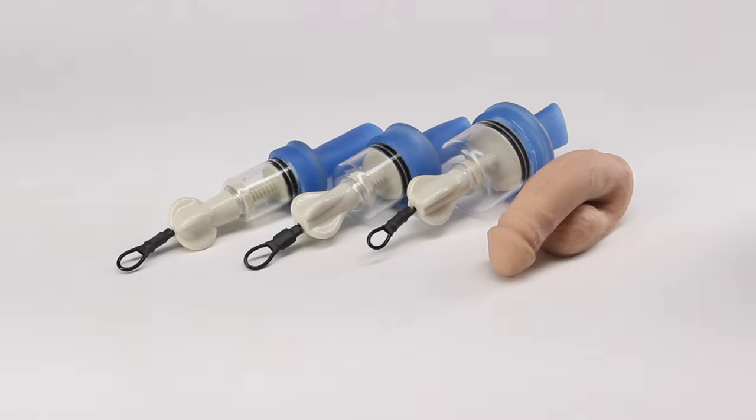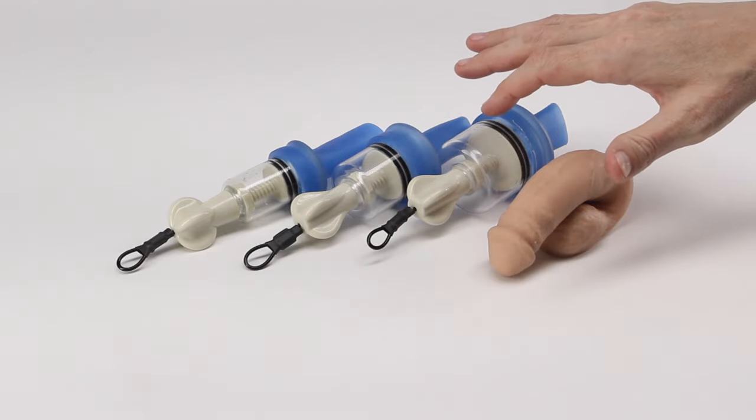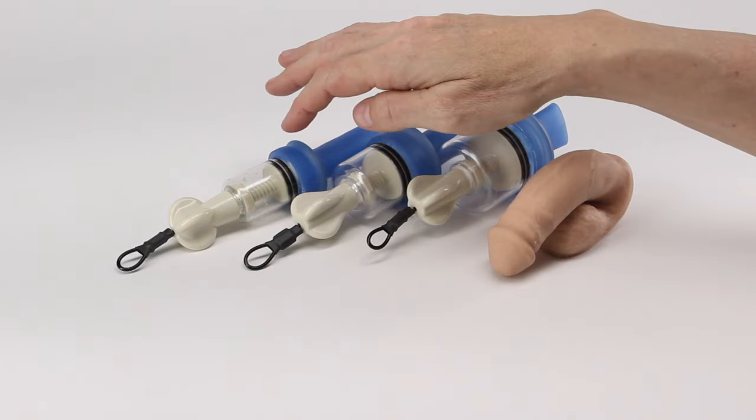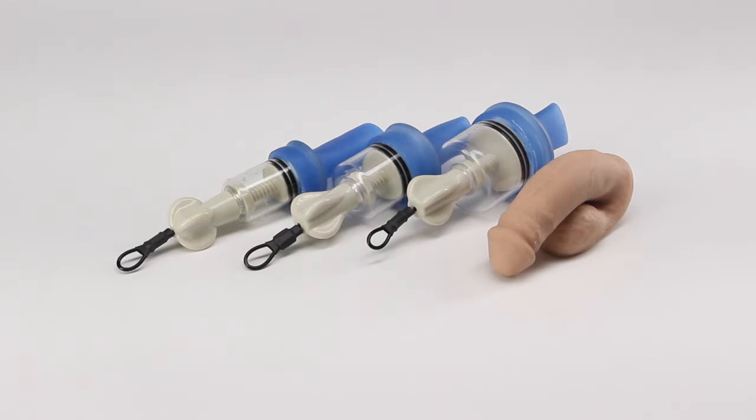If you're excessively large in girth you can go with the 2 inch SiliStretcher. Or if you're below average on flaccid girth you can go with the 1.1 inch SiliStretcher.